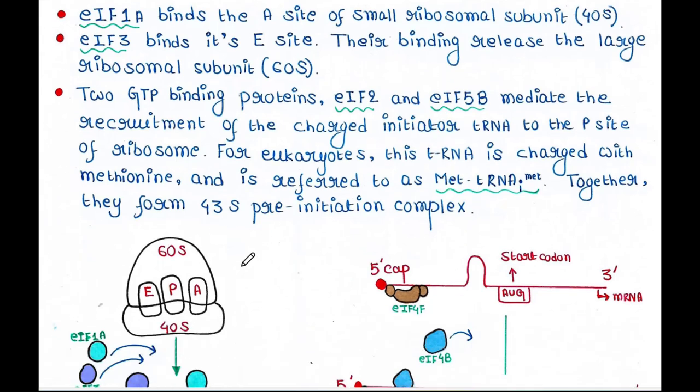Basically, here we have the ribosome. The eukaryotic ribosome has two subunits: the large subunit is 60S and the small subunit is 40S. The ribosome contains three pockets: E, P, and A. This is the mRNA. So what happens?